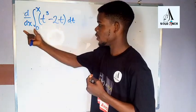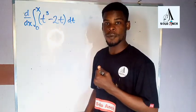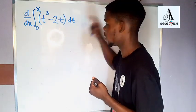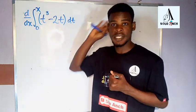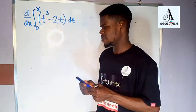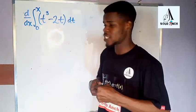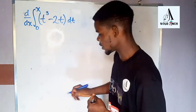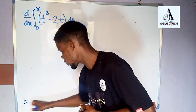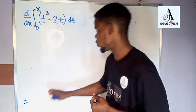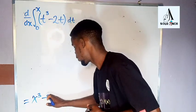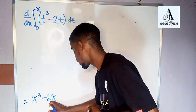In this video, we want to find the derivative of the integral from 0 to x of this function right here with respect to t. We can easily do this by applying the first fundamental theorem of calculus, and when we do that, the answer will just be x to the third power minus 2x.